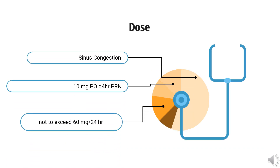Dose — Sinus Congestion: 10 mg PO every 4 hours as needed, not to exceed 60 mg per 24 hours.